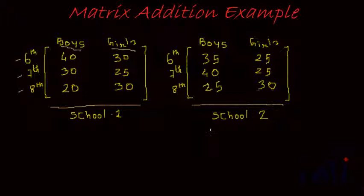How would we do this? We would want to know the number of boys in class 6 in both schools together, which would essentially mean adding up the number of boys in class 6 in school 1 with the number of boys in class 6 in school 2. If you add these two, you will get 75 as the answer. Similarly, number of girls in class 6 in school 1 and number of girls in class 6 in school 2 gives you 30 plus 25, which is 55.